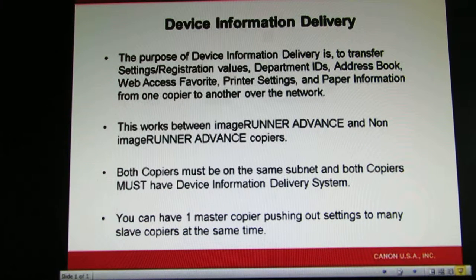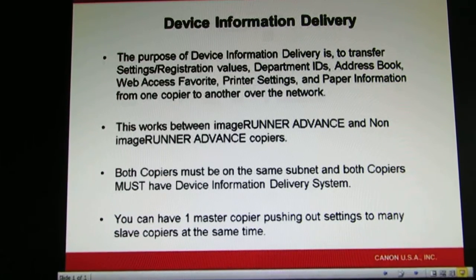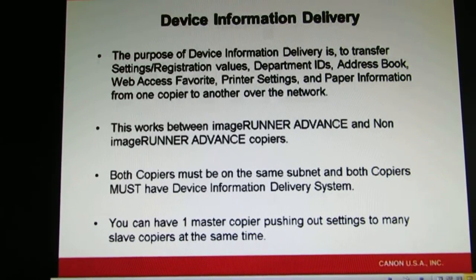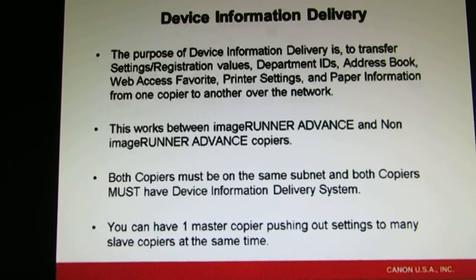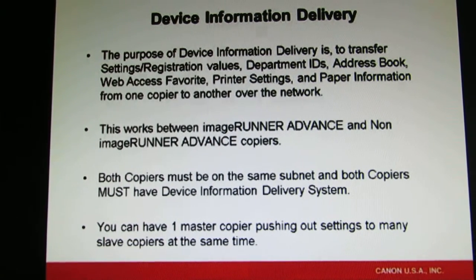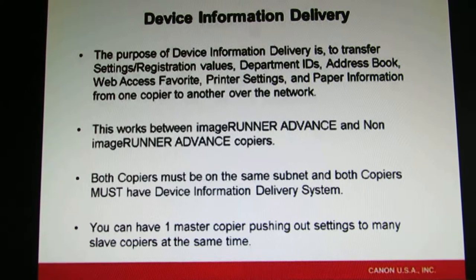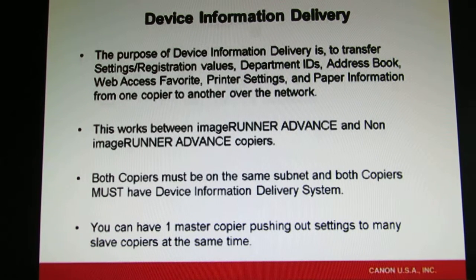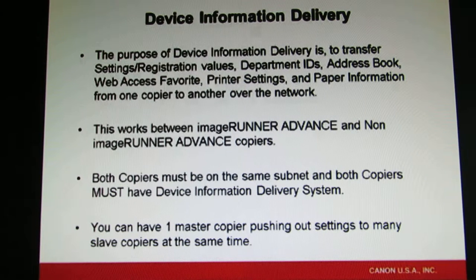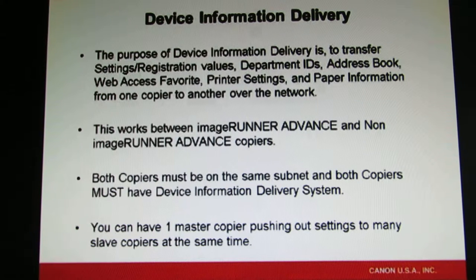Device information delivery is ideal when you're at a customer location and you get rid of an old device and you want to transfer all the settings on the old device to the new machine. The old device could be a 3380, could be a 3045, and you go into either a first or second generation imageRUN Advanced. This is when device information delivery comes into play. Let's take a look at the second generation imageRUN Advanced 5255, and what we're going to push over today is Department ID.